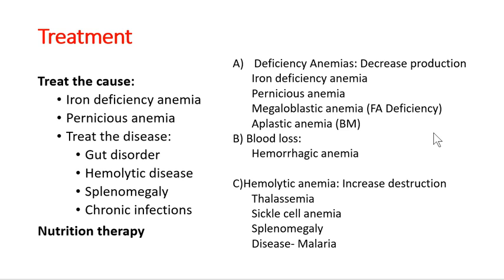Treatment depends on the cause. For iron deficiency anemia, we give iron supplements — not vitamin B or folic acid. Pernicious anemia has its specific treatment. If the cause is a gut disorder, that needs to be treated. For hemolytic anemia, the spleen may need to be removed. If chronic infection is the cause, that must be treated. Nutritional therapy is also an important component alongside specific treatment.